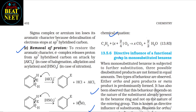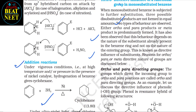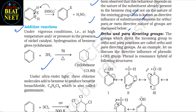13.5.6 Directive influence of a functional group in monosubstituted benzene: when monosubstituted benzene is subjected to further substitution, three possible disubstituted products are not formed in equal amounts. Either ortho and para products or the meta product is predominantly formed. This behavior depends on the nature of the substituent already present in the ring, not on the nature of the entering group. This is known as the directive influence of substituents. The groups which direct the incoming group to ortho and para positions are called ortho and para directing groups.